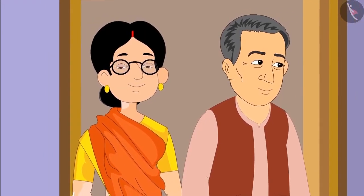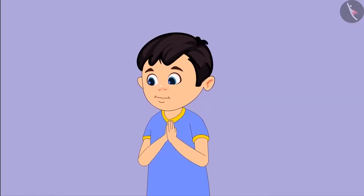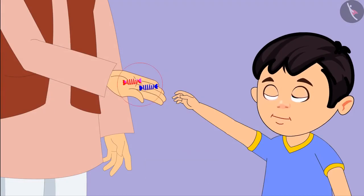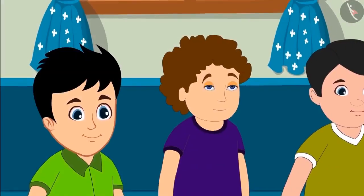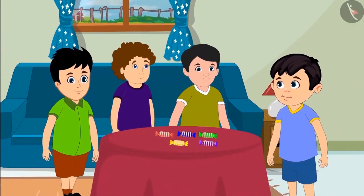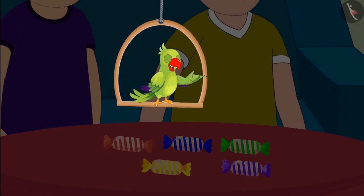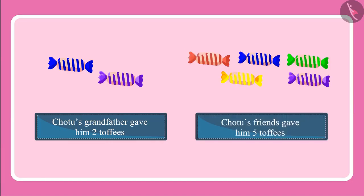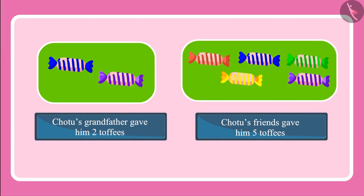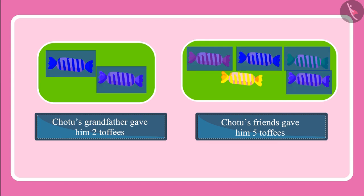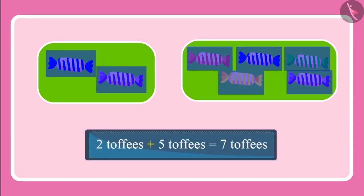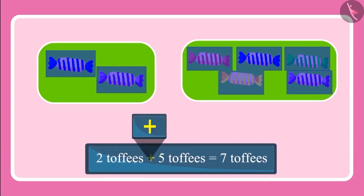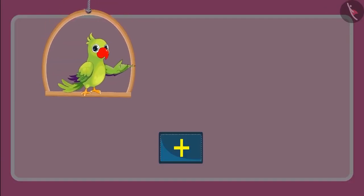It is festival season and many guests are expected. Chotu's grandmother and grandfather arrived first. Chotu's grandfather gave him two toffees. After some time, Chotu's friends also arrived and gave him five toffees. So can you tell how many toffees Chotu got in total? Chotu's grandfather gave him two toffees and his friends gave him five — two toffees and then five more toffees. Let's count: one, two, three, four, five, six, seven — Chotu now has seven toffees.